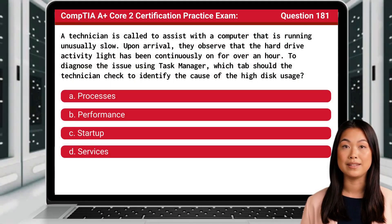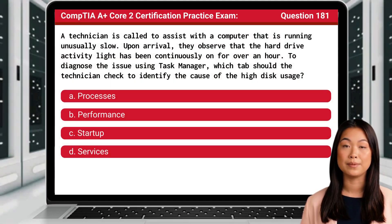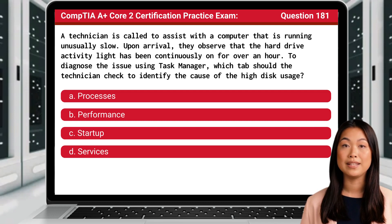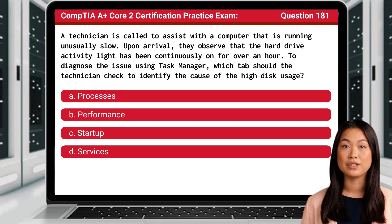Question 181. A technician is called to assist with a computer that is running unusually slow. Upon arrival, they observe that the hard drive activity light has been continuously on for over an hour. To diagnose the issue using Task Manager, which tab should the technician check to identify the cause of the high disk usage?